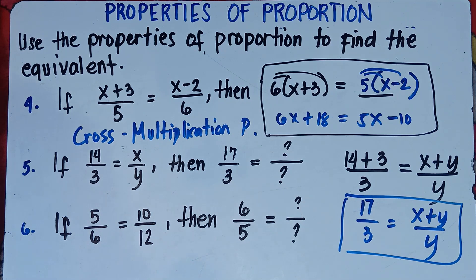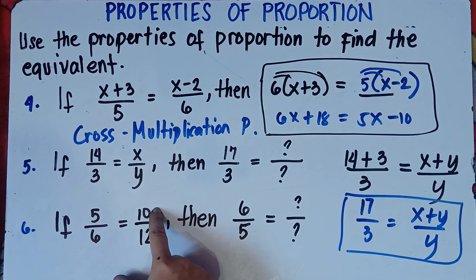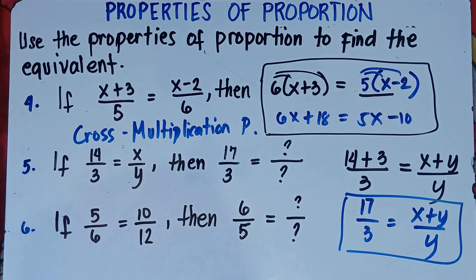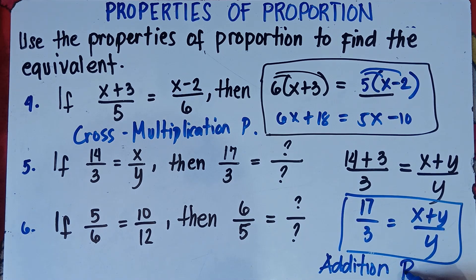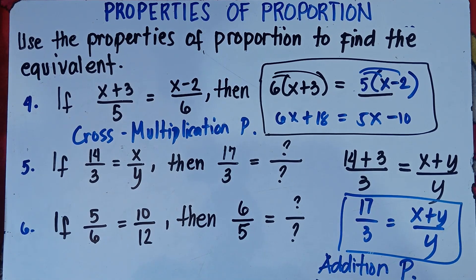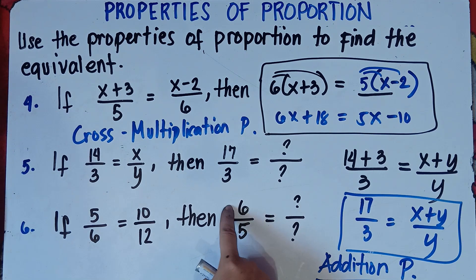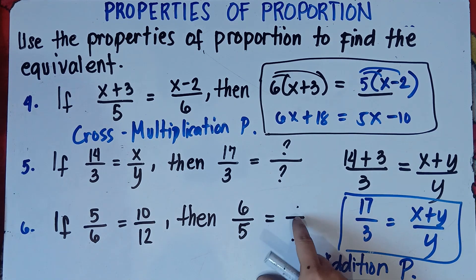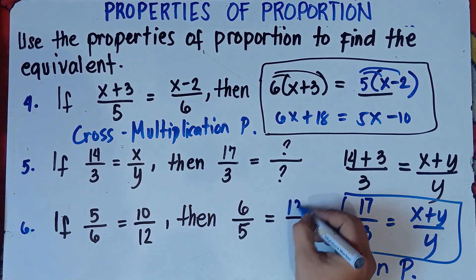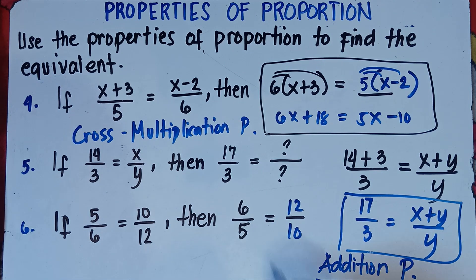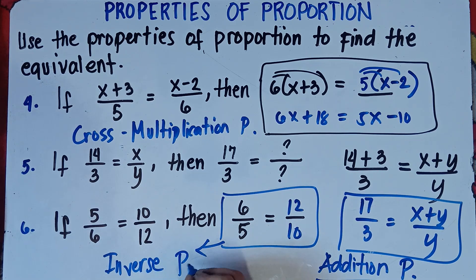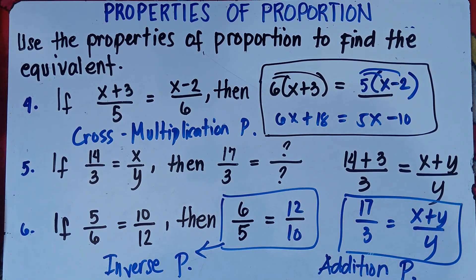Number 6: if 5 over 6 equals 10 over 12, then 6 over 5 equals blank over blank. The numerator and denominator of 5 over 6 have been swapped — 5 becomes the denominator and 6 becomes the numerator. That's the inverse property. So the answer is 12 over 10. The property is inverse property.